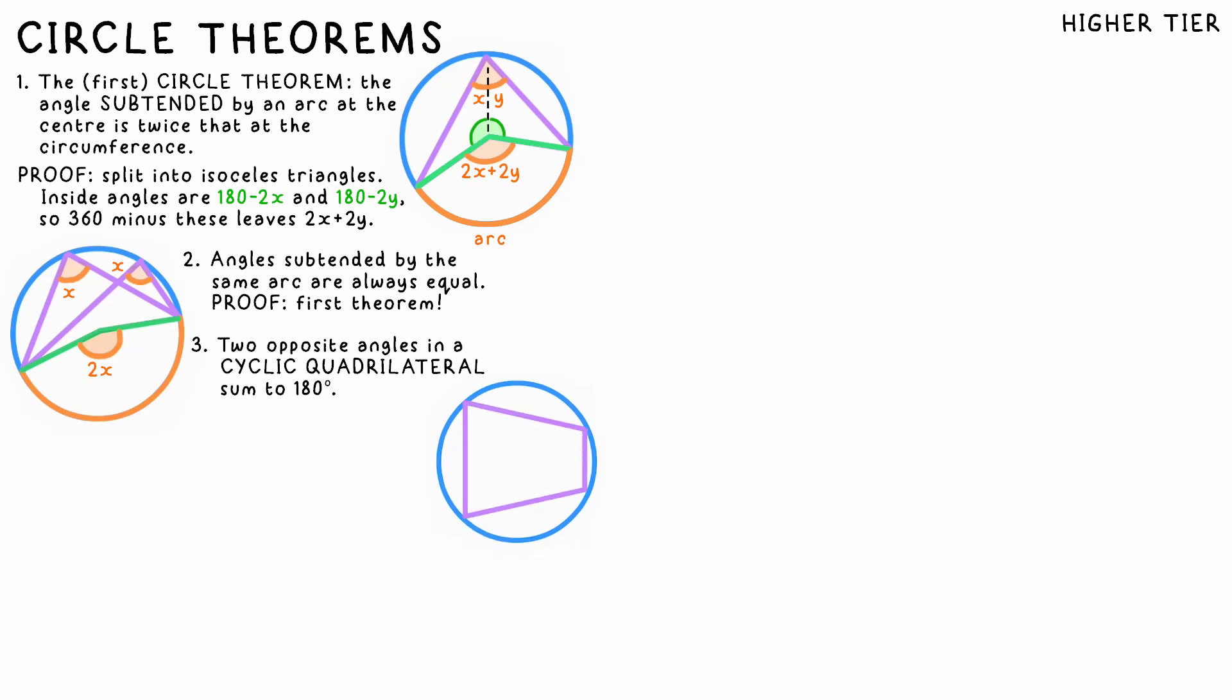A cyclic quadrilateral is a four-sided polygon where all four vertices touch the circumference. Two opposite angles in one of these always add up to 180 degrees.